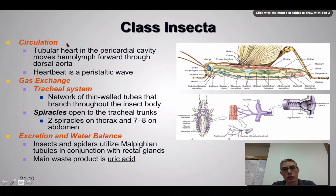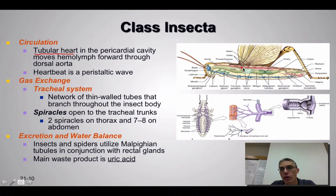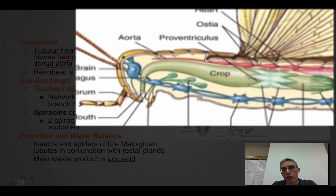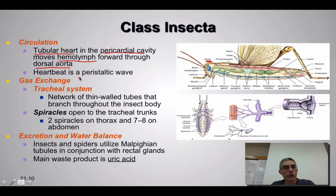Now for a quick overview of the circulatory, respiratory, and excretory systems. For the circulatory system, insects have what we consider a tubular heart, found in the pericardial cavity — you can see it right through here in the grasshopper. Its main job is to move the blood, which in this case is called hemolymph, forward through the dorsal aorta. The heart operates in a peristaltic wave — think of a wave at an athletic event — moving throughout the entire length of the animal rather than a simple relax-and-contract beat.